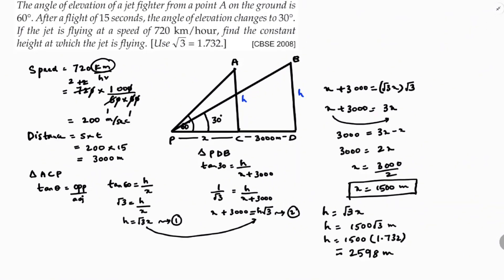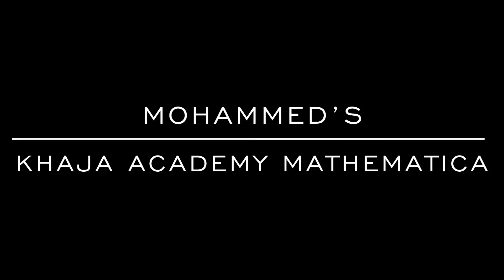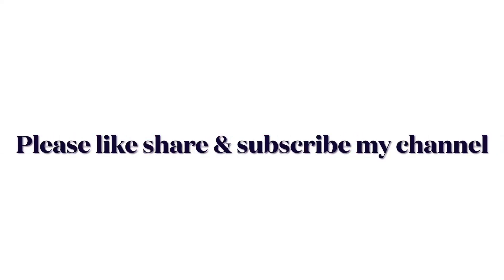To summarize: they gave the speed as 720 km per hour, which I converted to meters per second. Then I calculated how much distance the jet covers in 15 seconds — 3000 meters. Using triangles ACP and BDP, I formed two trigonometric equations and solved for the value of H.